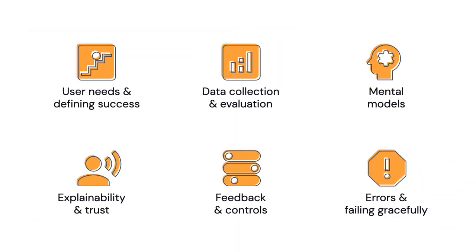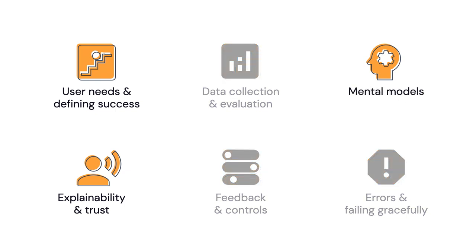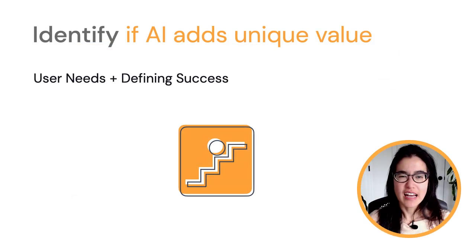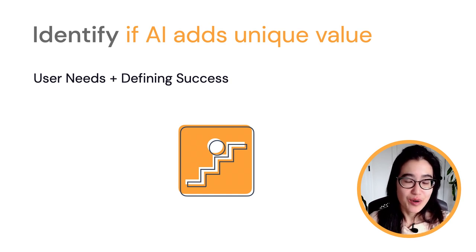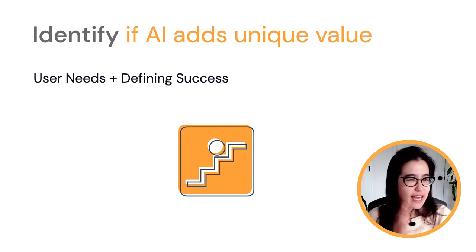The guidebook has six chapters, covering everything from how to identify user needs and defining success for your AI-based product, to acknowledging that your models will fail and output errors — so how can you design for failure and provide graceful paths forward for your users? Due to the limited time we have today, we'll be focusing on core concepts in three chapters specifically: user needs and defining success, mental models, and explainability and trust. The first chapter is user needs and defining success — how to identify if AI adds unique value to your product, or a common question: should we AI-ML this?